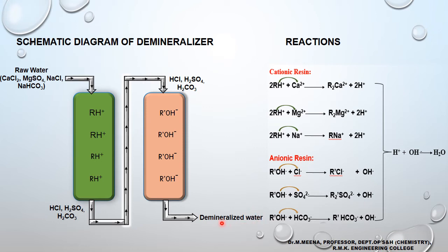The demineralizer works until the cationic and anionic resin columns are exhausted — meaning there are no more hydrogen ions in the cationic column and no more hydroxyl ions in the anionic column. At that point, one option is to discard and replace both resins with fresh ones, but this is not cost-effective.